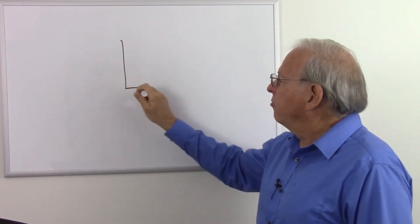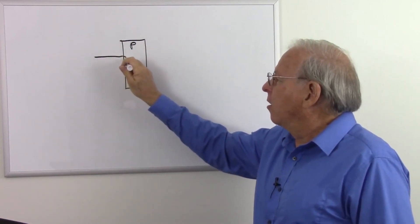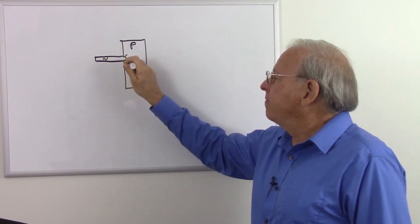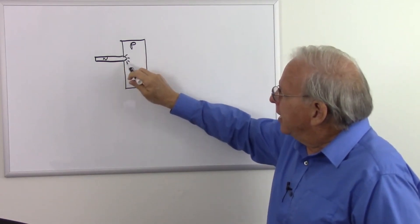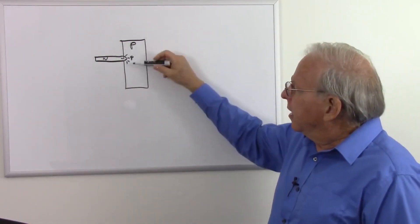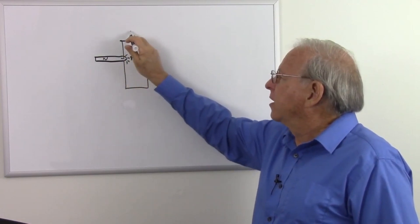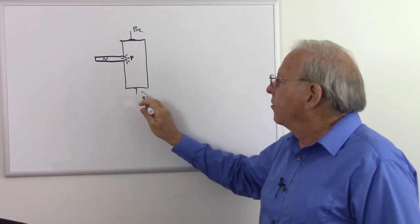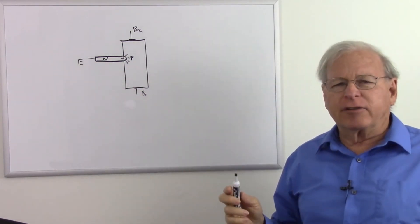A unijunction transistor is essentially a piece of P-type silicon, and they attach a bar of lightly doped N-type silicon and fuse that. Where they fuse it to the P-type silicon, it infuses some N-type material into it, but it ends up making a P-N junction right there where it gets fused. Notice I did draw this offset, because it is not put in the center. The connections are: base number two at the top, base number one at the bottom, and this connection is called the emitter. So it's a two-base device, unlike other types of transistors.